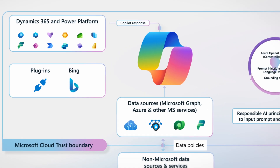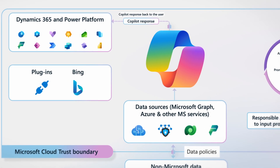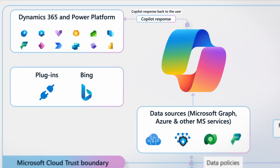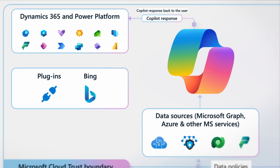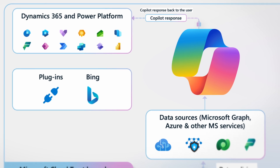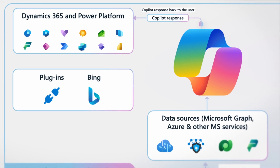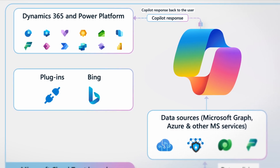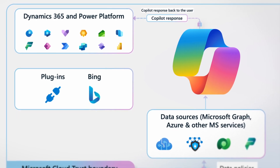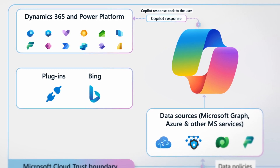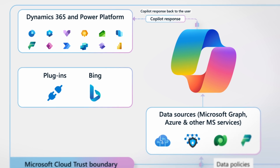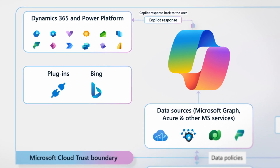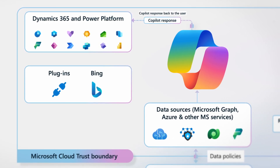Copilot then returns a response to the user in the form of natural language or other content. For example, a response might be in the form of a chat message, an email, or a chart. The user then reviews the response before taking action.